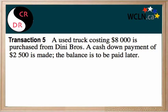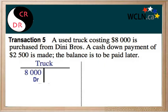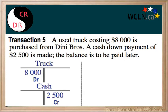This transaction will be using more than two accounts. A truck costing $8,000 has been purchased. This means that the asset truck account increases by $8,000 — that would be a debit entry. We made a cash down payment of $2,500, which means cash has decreased by $2,500, and that would be a credit of $2,500.